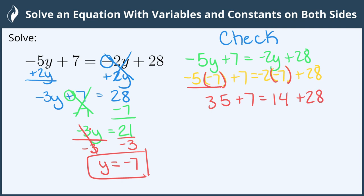Now we can do the last step in the order of operations, which is adding and subtracting. 35 plus 7 is 42. And on the right hand side, 14 plus 28 is also 42. So it checks, 42 does equal 42. That means that our solution of y equals negative 7 is correct. And we're all done.